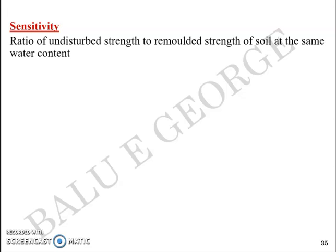Sensitivity of soil is the ratio of undisturbed strength to the remolded strength of soil at the same water content. By definition, S sensitivity equals UCS undisturbed divided by UCS remolded, which means unconfined compressive strength of undisturbed soil divided by unconfined compressive strength of remolded soil.